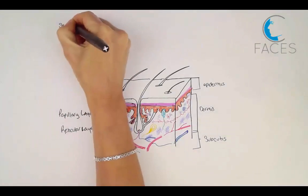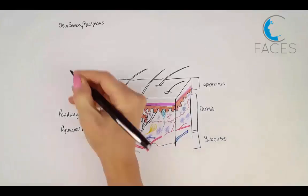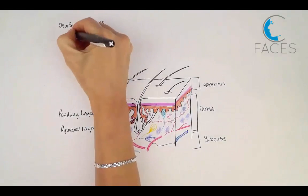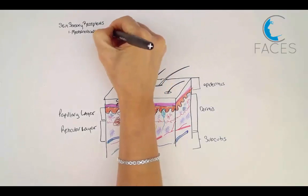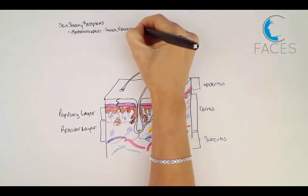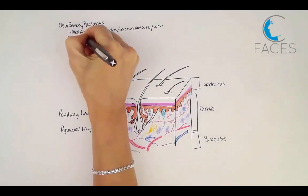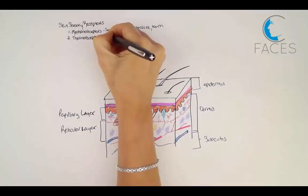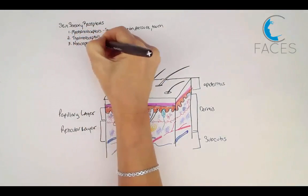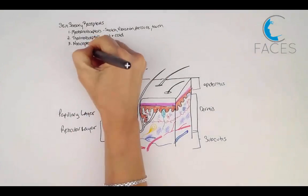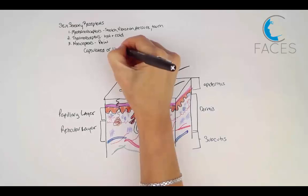Sensory receptors of the skin can be classified into three groups according to the type of response they mediate. The first is mechanoreceptors, which sense stretch, vibration, pressure, and touch. The second are thermoreceptors, which sense hot and cold. And the third are nociceptors, which sense pain. These can be further subdivided as either capsulated or unencapsulated.